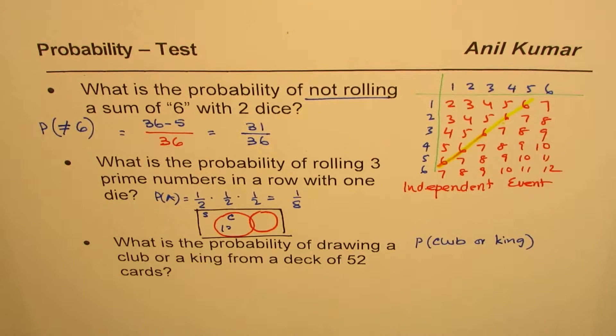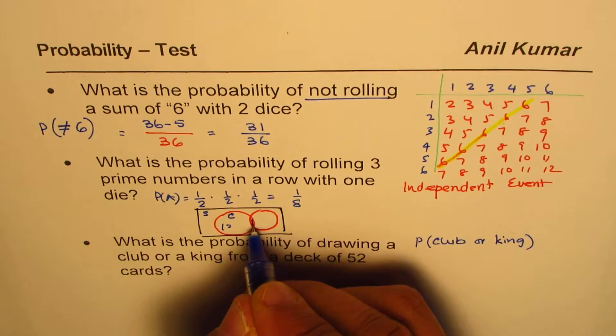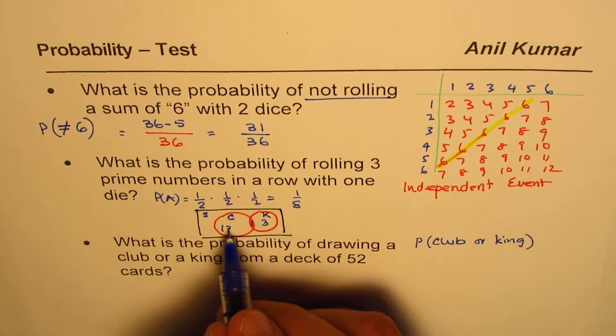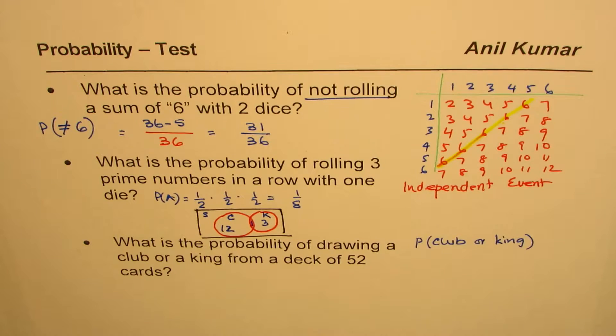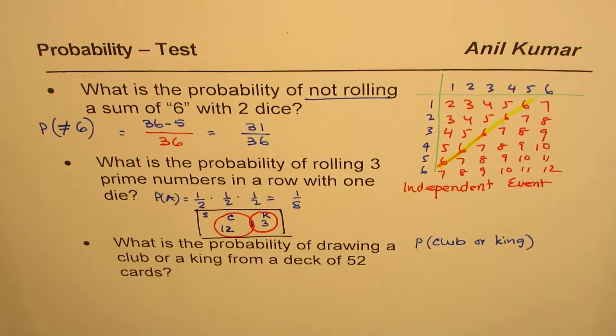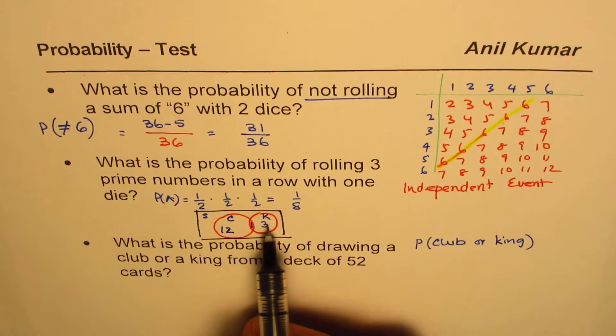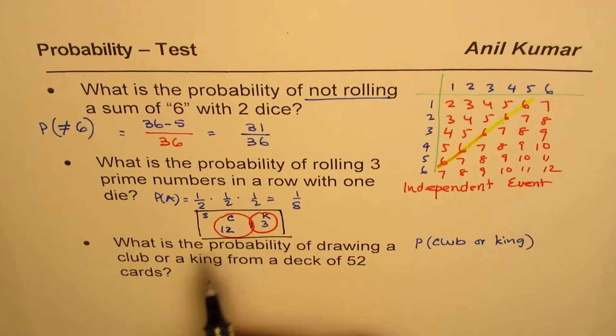Yes we do. One king is of clubs. So there are three here, you get the point. So there are 12 plus 1, 13 club cards. Now since this is a combination, you could combine here: 12 plus 1, 13 plus 3, 16.